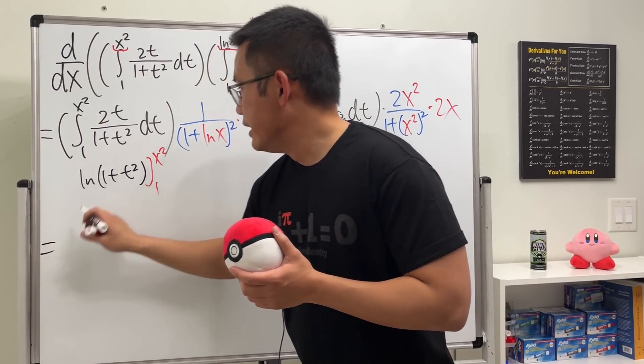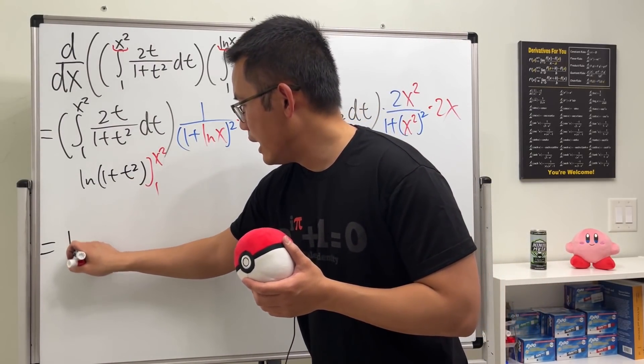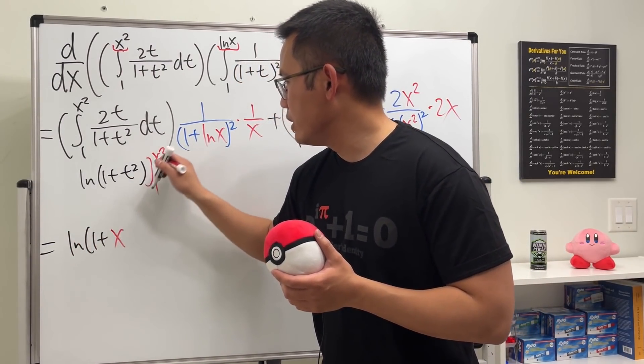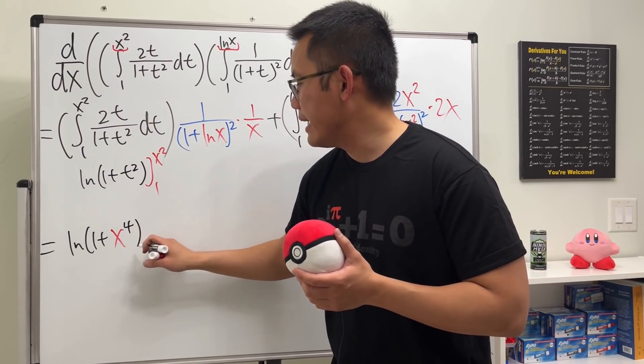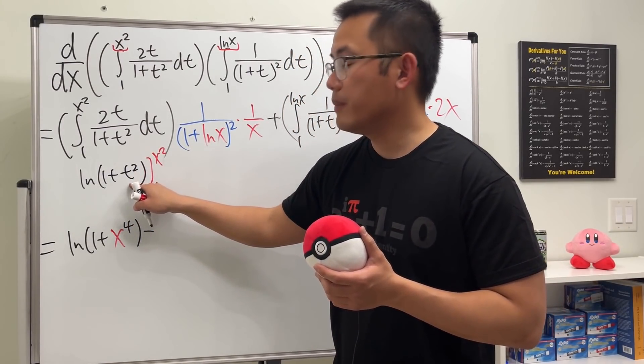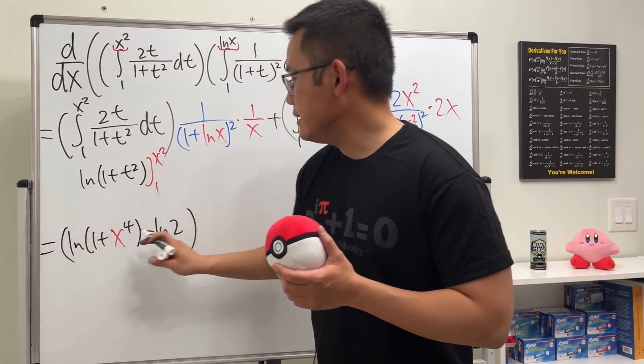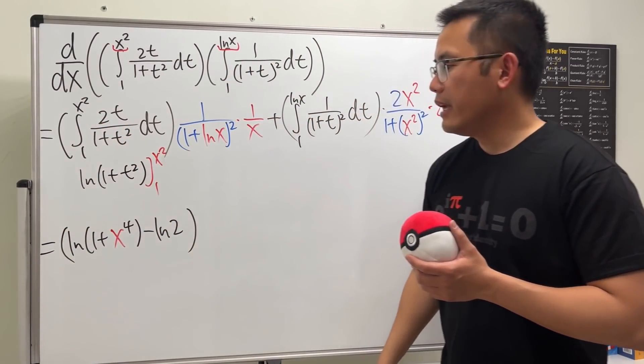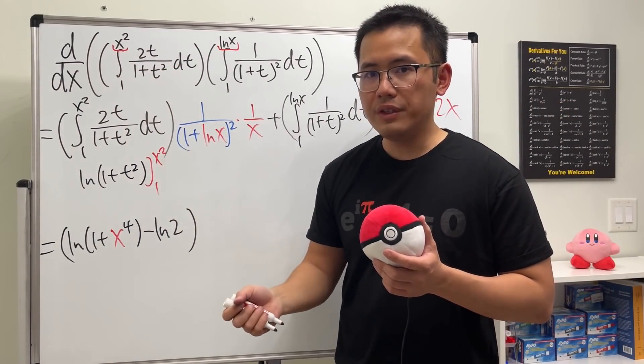Notice I didn't put down the absolute value because everything is positive. And then we just have to go from 1 to x squared. Check this out: this part we just have to plug in and plug in subtract. So we will get ln of 1 plus x to the second, and then to the second, so that's to the fourth power, and then minus plug in 1 here. Work that out, you get ln(2).